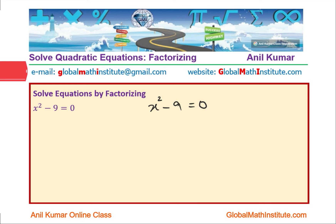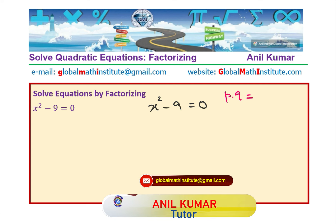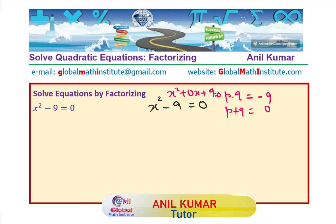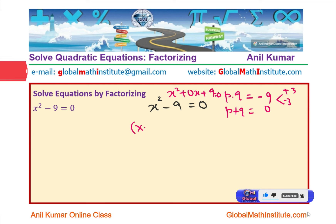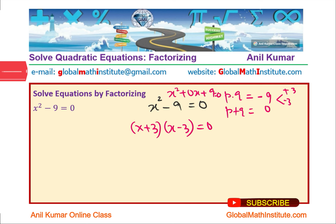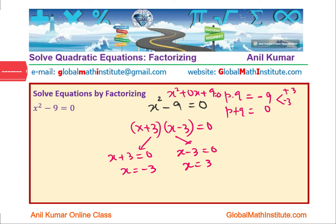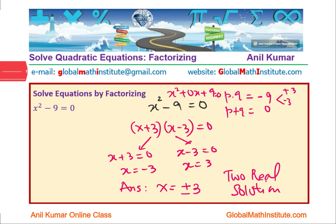Question 10: x² - 9 = 0. This is a difference of squares. We need two numbers with product -9 and sum 0 (since there is no x term, i.e., x² + 0x - 9 = 0). Those numbers are +3 and -3. So we factor as (x + 3)(x - 3) = 0. Setting x + 3 = 0 gives x = -3; setting x - 3 = 0 gives x = 3. The two real solutions are x = ±3.